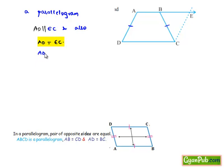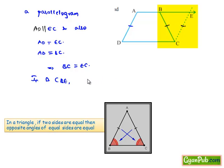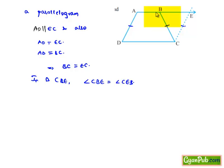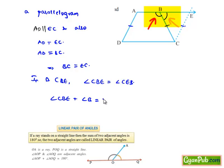But we know that AD is equal to BC, which implies BC is equal to EC. Now if we consider triangle CBE, two sides are equal, so the angles opposite to those sides will also be equal. So we can say angle CBE is equal to angle CEB. Also, angle B and angle CBE form a linear pair, and the sum of angles in a linear pair is 180 degrees, so angle CBE plus angle B is equal to 180 degrees.